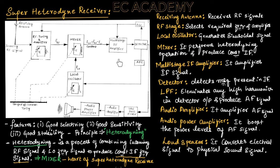This is the block diagram of Super Heterodyne Receiver. This receiver works on the principle of heterodyning. Heterodyning is a process of combining the incoming RF signal and local oscillator frequency signal to produce a constant intermediate signal.